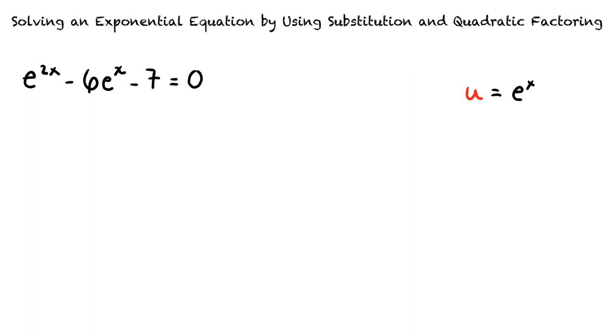Why are we using u substitution in this problem? Good question! U substitution allows us to solve this problem in simpler terms without changing the solution of the equation. We will substitute e to the power of x back in for u at the end of the problem to solve for x. After applying u substitution, our equation now looks like this. u squared minus 6u minus 7 equals 0.